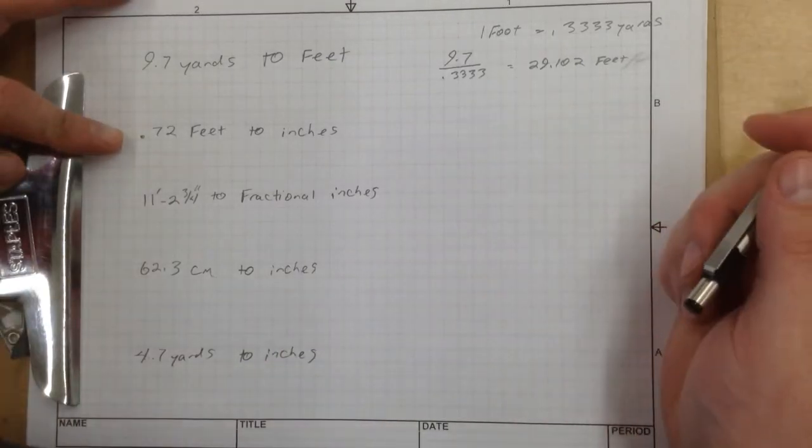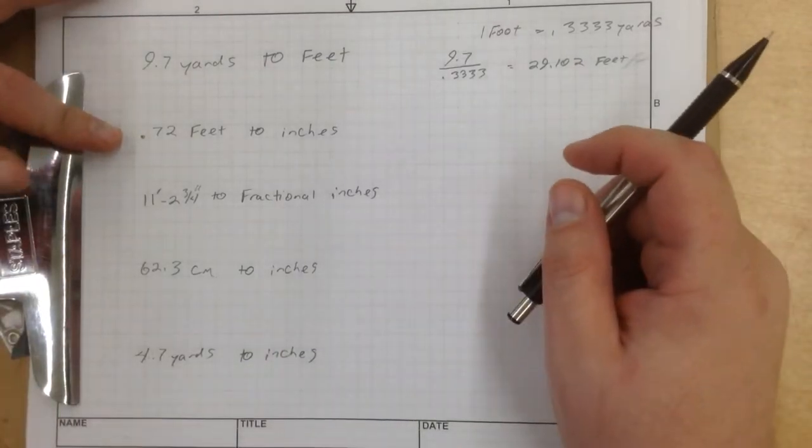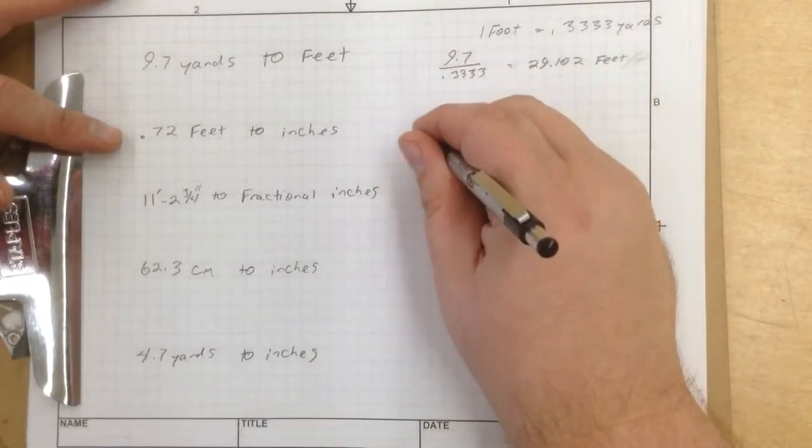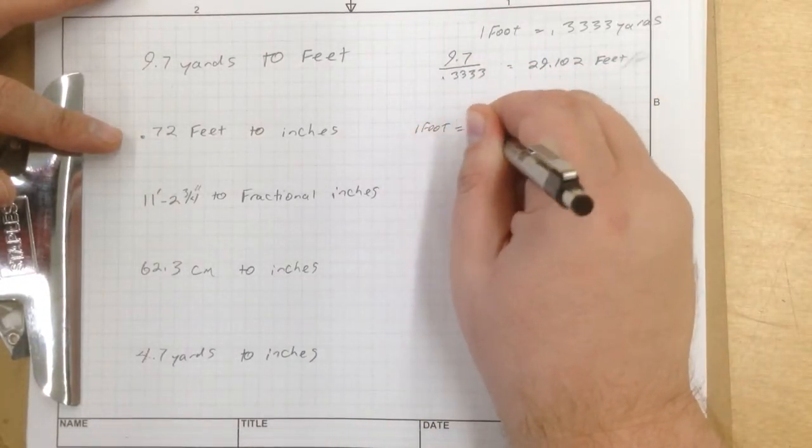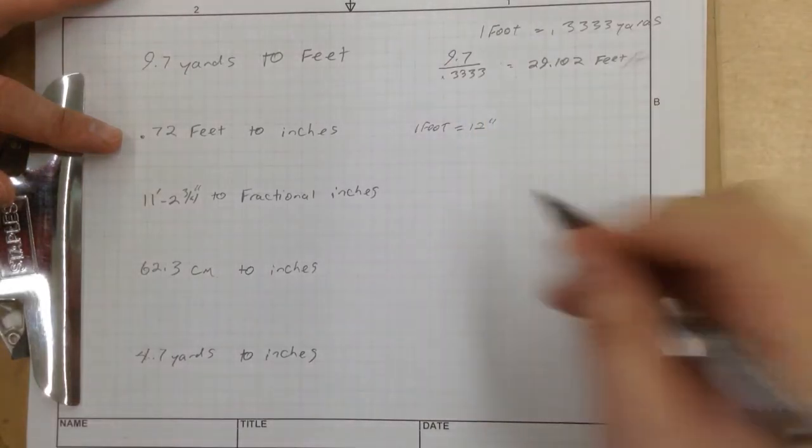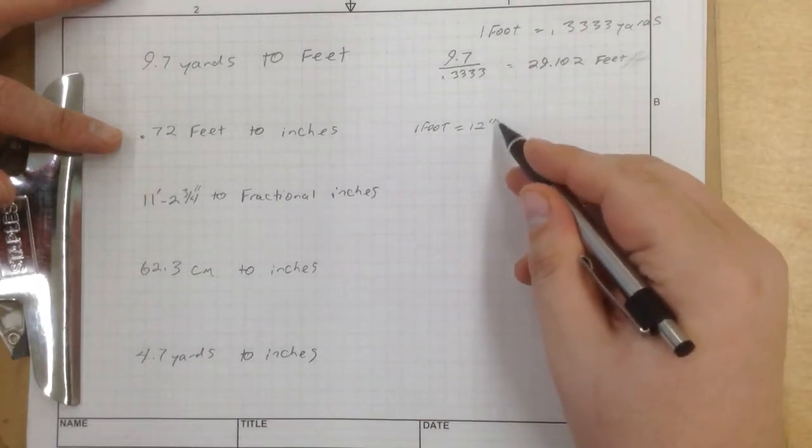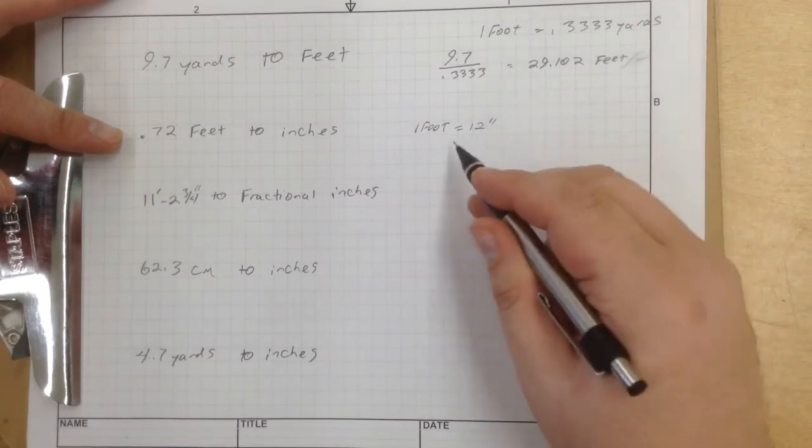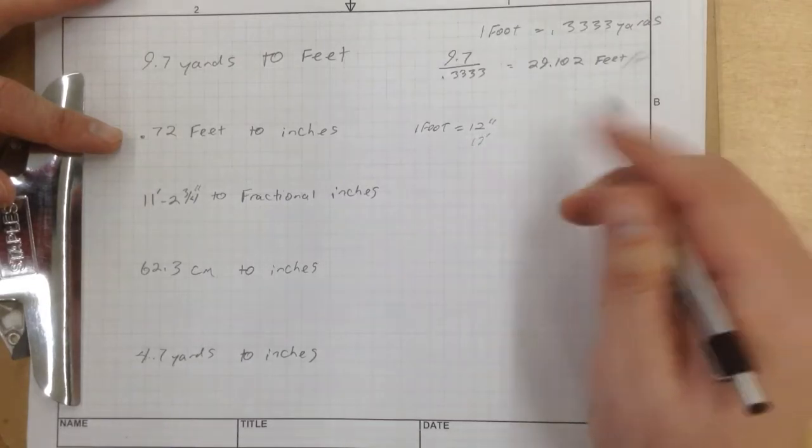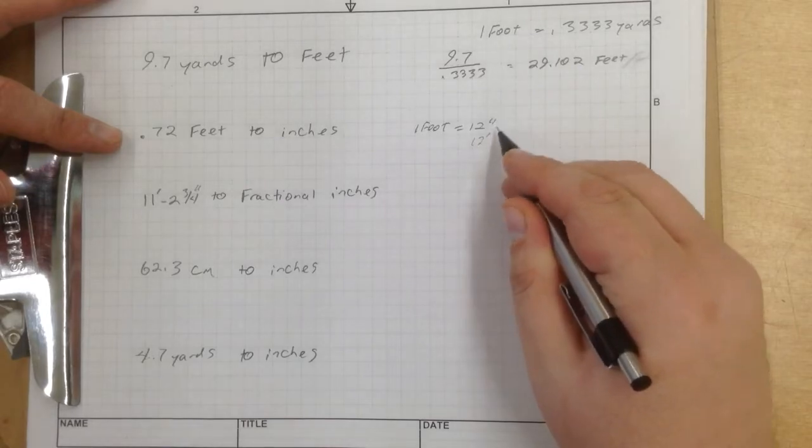Now the next one is 0.72 feet per inches. Remember that there are 1 foot equals 12 inches. And in case you didn't know this yet, these two hash marks right there, that means inches. If you have one hash mark, that means 12 feet. Two hash mark is inches, one hash mark is feet.